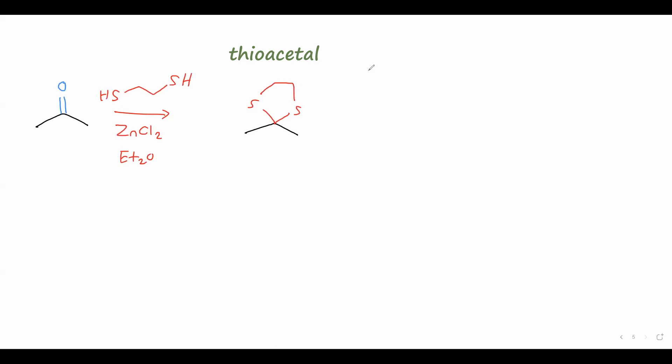The nice thing about thioacetals is that they are resistant to hydrolysis in aqueous acid. Like I mentioned earlier, if you treat an acetal with an excess of water and some acid to catalyze the reaction, it will reform the carbonyl compound. In order to hydrolyze the thioacetal back to the starting material, we need to use a mercury-2 salt, such as mercury-2 chloride. This is often done in a solvent like acetonitrile.